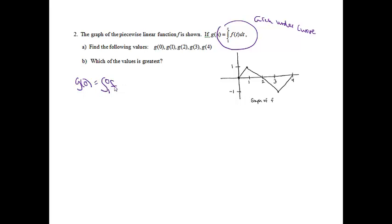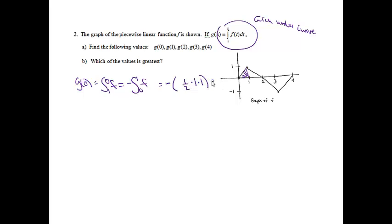We can't go from 1 to 0, so I'm going to make this the opposite of going from 0 to 1. From 0 to 1 is just a triangle, so it's going to be the opposite of the area of that triangle. It's 1/2, the base is 1, the height is 1, so this answer will be negative 1/2.